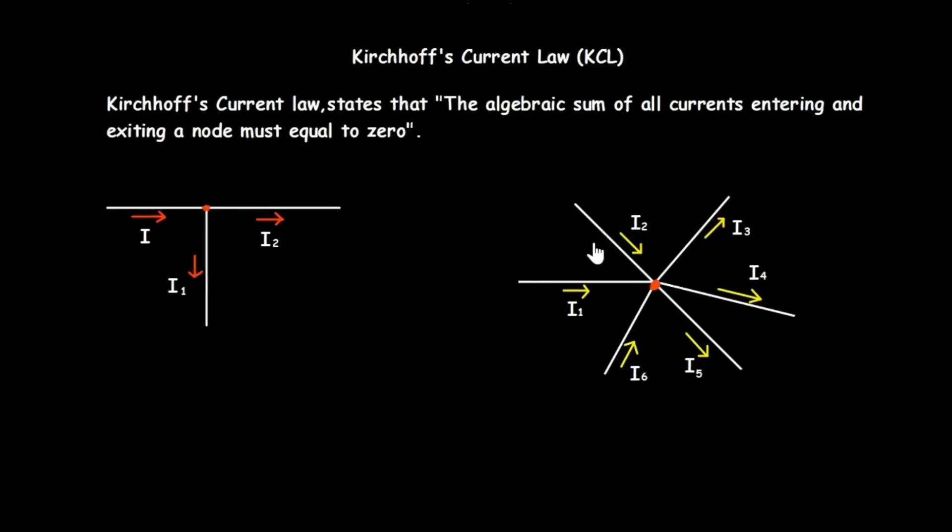In this lesson, you will learn about Kirchhoff's current law, which states that the algebraic sum of all current entering and exiting a node must be equal to zero.